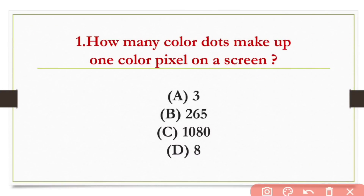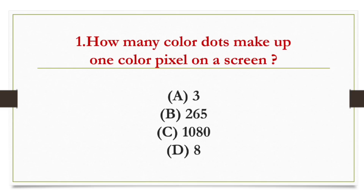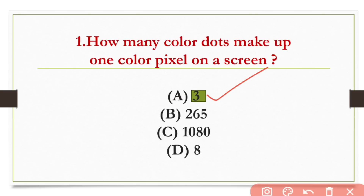The question is: how many color dots make up one color pixel on a screen? The answer is three dots. There are three color dots that make up one pixel on a screen.